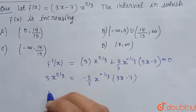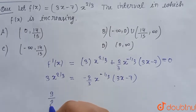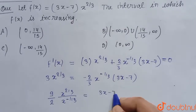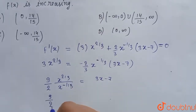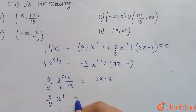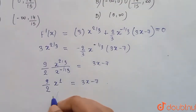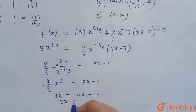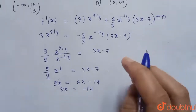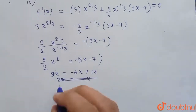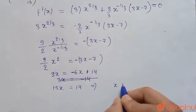Simplifying by combining x^(2/3) and x^(-1/3) to get x^1, we have: 9x = -2(3x - 7), which gives 9x = -6x + 14, so 15x = 14, meaning x = 14/15.